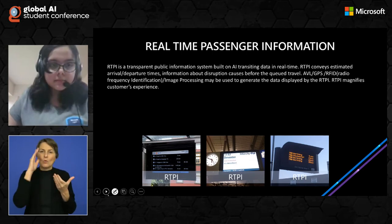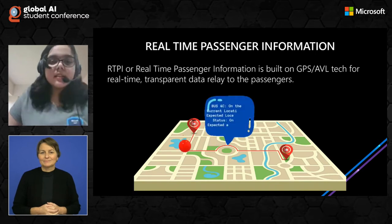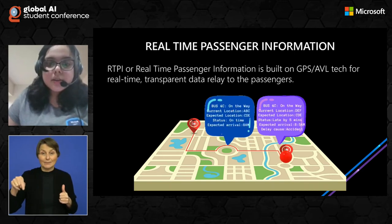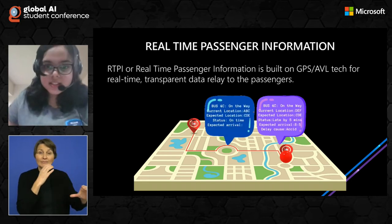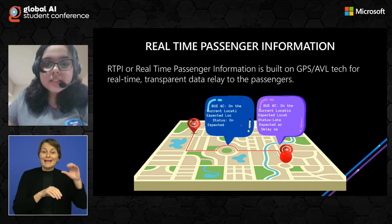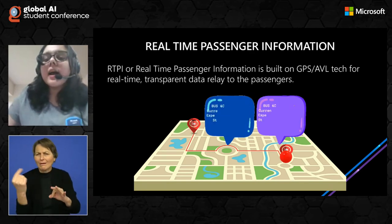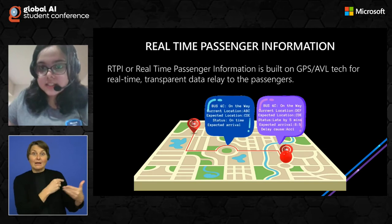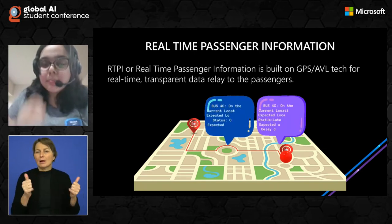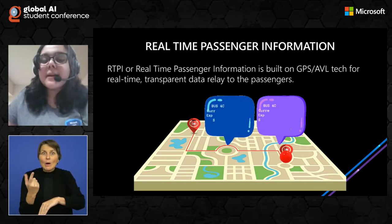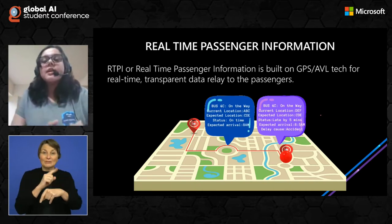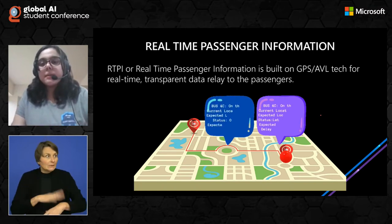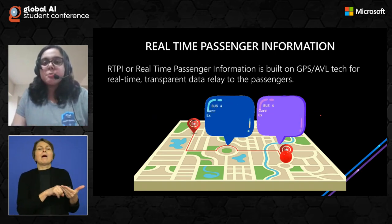RTPI also magnifies customers' experiences. For example, bus 4C was on its way with current location ABC, expected location CDE, status on time, expected arrival at 8 a.m. However, nearly two minutes later, bus 4C is still on its way, its current location has changed to DEF, its expected location is CDE, and it's now late by five minutes due to an accident, with expected arrival changed from 8 a.m. to 8:05 a.m. This is a very good example of real-time passenger information, so someone in a hurry would know exactly where the bus is right now.